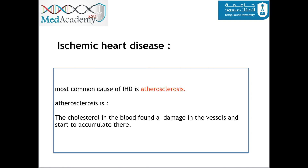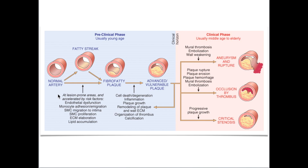The most common cause of ischemic heart disease is atherosclerosis. Atherosclerosis is when cholesterol in the blood finds damage in the vessel wall and starts to accumulate there. As you can see in this picture, this is a normal artery. Over time the cholesterol starts accumulating on a damaged blood vessel, and at an advanced level it will convert into either critical stenosis, occlusion by a thrombus, or aneurysm and fracture.